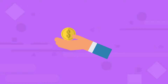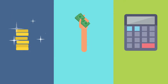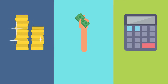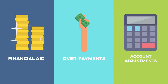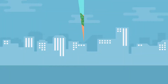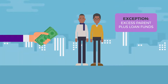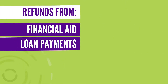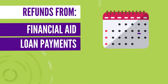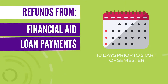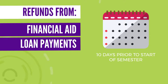Expecting a refund from NYU? A refundable credit balance may result on a student account because of financial aid disbursements, overpayments, or account adjustments. All refunds are issued to the student with the exception of refunds resulting from excess Parent PLUS loans. Refunds resulting from financial aid and loan payments are issued after the initial disbursement of financial aid, which generally occurs 10 days prior to the start of the semester.